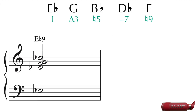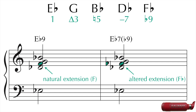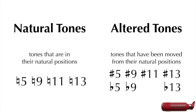For another example, in Eb9, the natural 9 is F. If we lower that by a half step to Fb, it becomes an altered tone — the Fb is the b9. Notice that the Fb is still an extension, since it is some type of 9, but it is an altered extension. So whenever we refer to extensions in general, we are referring to both natural extensions and altered extensions. The 7 altered tones are the b5, #5, b9, #9, #11, b13, and #13. The #13 is pretty rare, but it can be useful in major 7th chords.